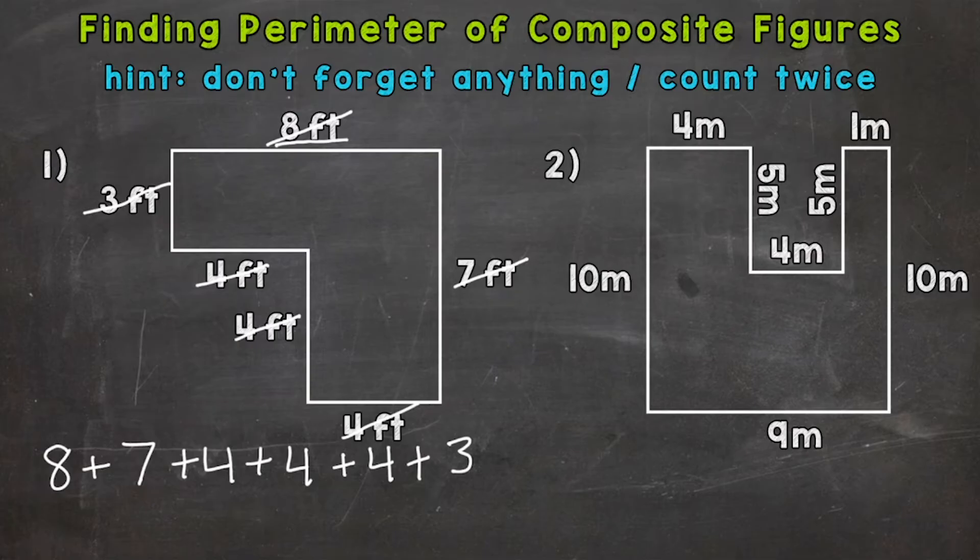We can always double-check that we included everything and didn't count anything twice by checking how many sides there were. One, two, three, four, five, six sides. And we have one, two, three, four, five, six measurements that we're adding up. So we're good to go.